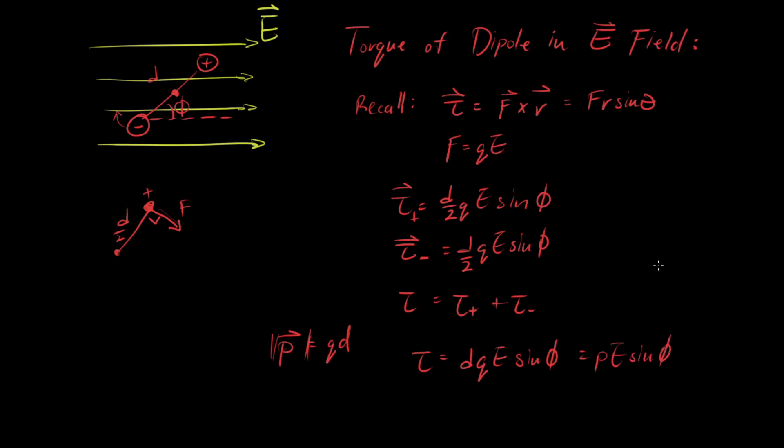And then recall that this cross product is equal to F, r, sine theta, and so we can notice a similar pattern here, and we can say that p cross E is torque. So the torque vector is equal to the dipole vector cross the electric field. And so the main point to get here is that it's a perpendicular force on this positive charge, which is why we have to do a cross product.